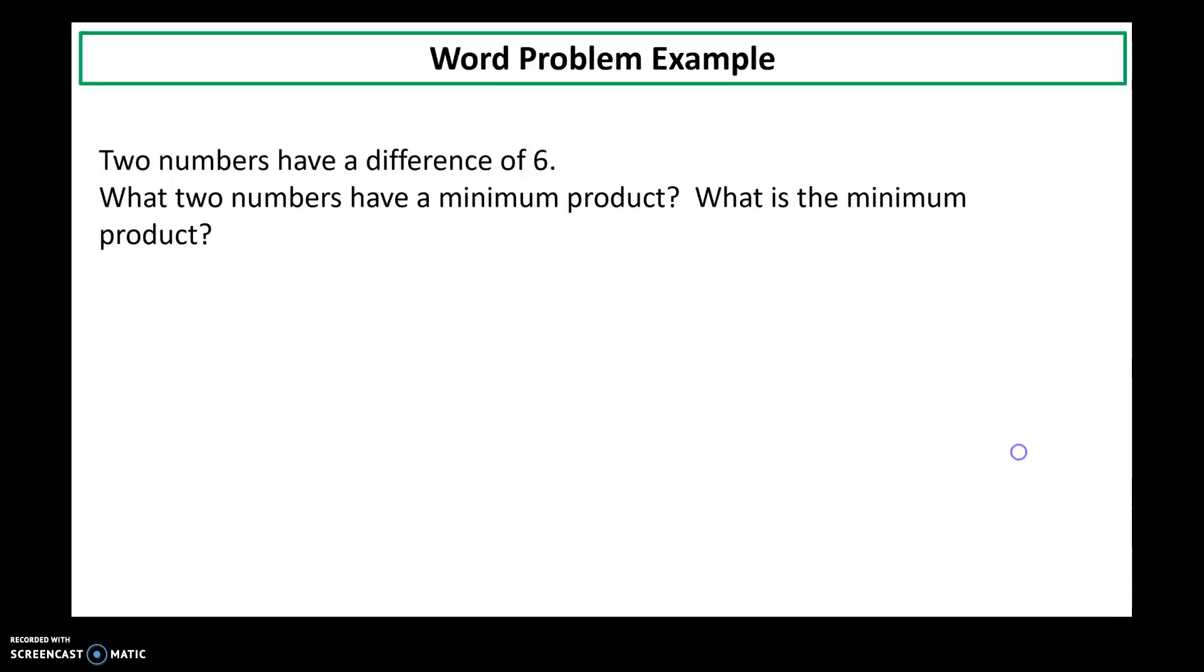I'm going to set up one more example. Two numbers have a difference of 6. What two numbers have a minimum product? And then what is their actual product? So what two numbers have a minimum product? So I'm looking to find the smallest possible value when I multiply these numbers together. So I want the product of two numbers to be as small as possible.